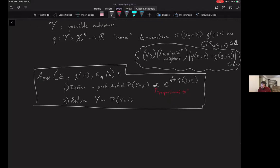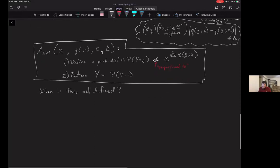Before I give you intuition for it, let's just check when does this actually make sense. When is this well defined? When is it possible to find such a probability distribution? One case is when if Y is finite. If the set Y is finite, we're fine in that case. The mechanism is always well defined.